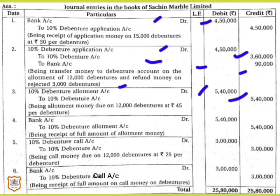On receipt of allotment money: Bank Account is debited by rupees 5,40,000, and 10% Debenture Allotment Account is credited by rupees 5,40,000. Narration: being receipt of full amount of allotment money.